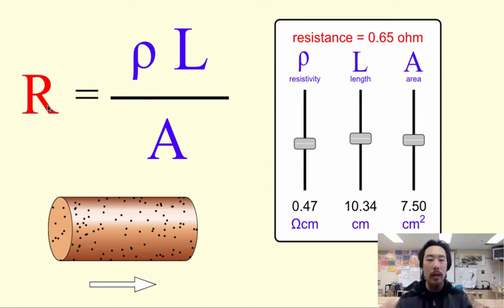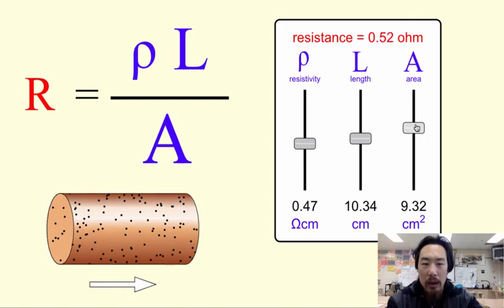Which means that if the denominator increases, the numerator on the other side has to decrease. And if we take a look at the simulation, let's see if this holds true.